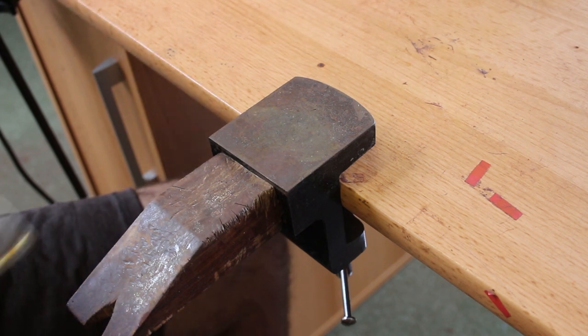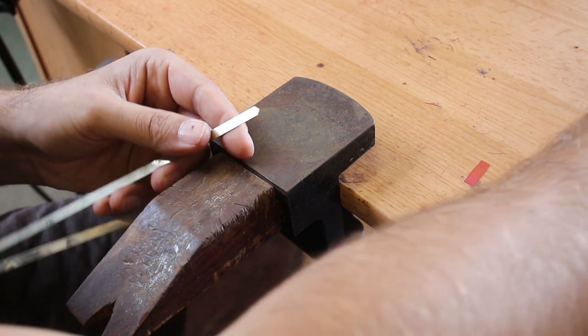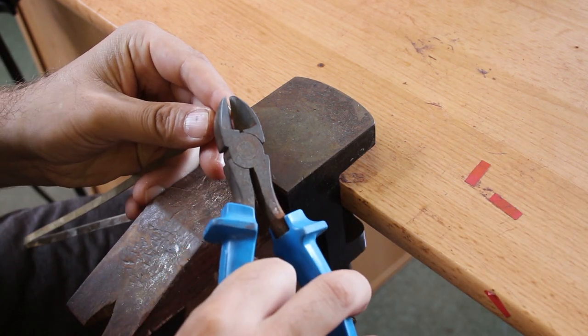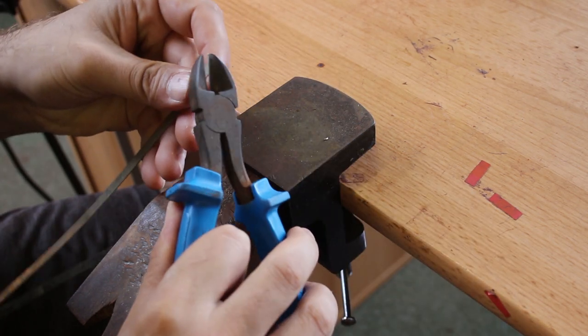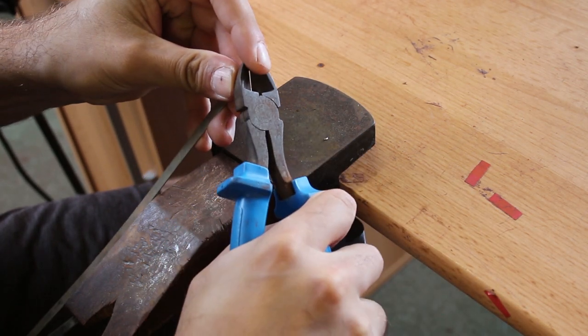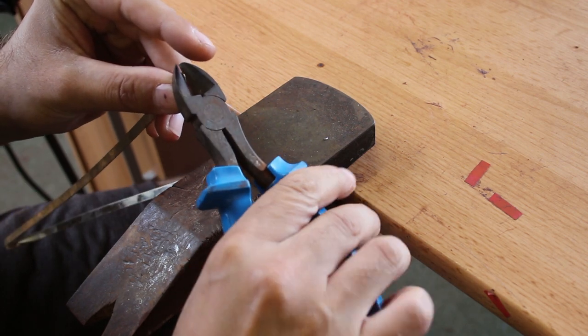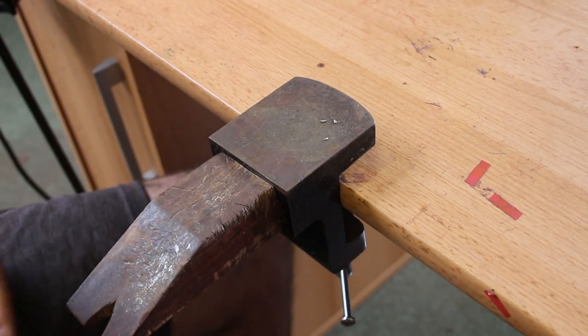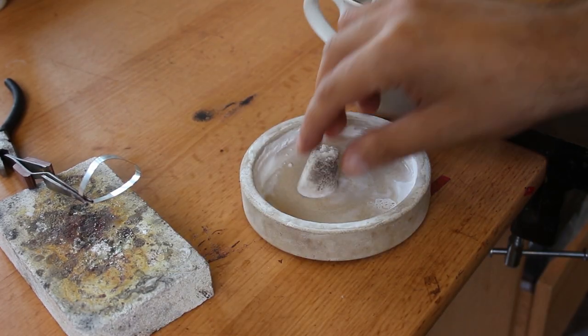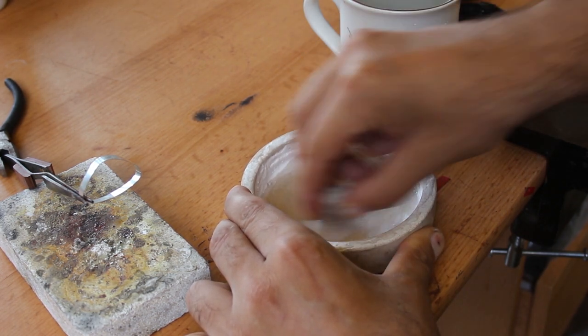So the next job was to solder the seam of that bezel wire. To do this I use hard silver solder because that has a slightly higher melting point than easy silver solder. Basically this was the first of two joints that I would be soldering on the piece, so it made sense to use hard solder to solder the bezel.